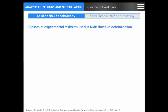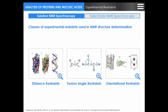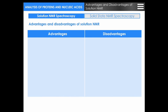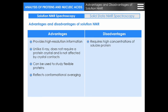The higher number of restraints per residue usually results in lower RMSD of backbone atom positions in the ensemble of conformers representing the NMR structure. Backbone dihedral angles phi and psi shall be located only in energetically allowed regions of the Ramachandran plot. There are three classes of experimental restraints: distance restraints, torsion angle restraints, and orientational restraints. The advantages of solution NMR are high resolution, no protein crystal required, and it can study flexible proteins and conformational averaging. Disadvantages: requires high concentration of soluble protein, cannot be applied to large proteins, and cannot be used with amyloid fibrils.